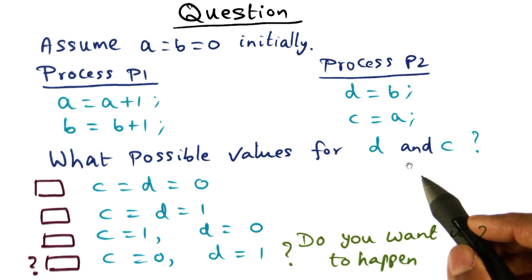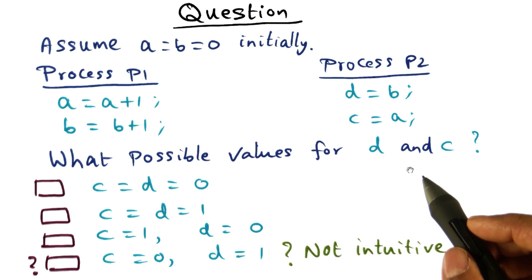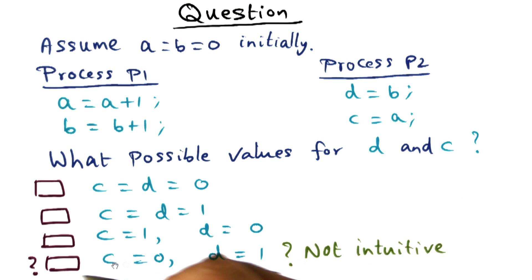Do you want it to happen? Now intuitively, you would see that this is not something that you expect to happen. As a programmer, you don't want surprises. Right? And if you don't want surprises, perhaps if there's a non-intuitive result, that's something that should not be allowed by the model.